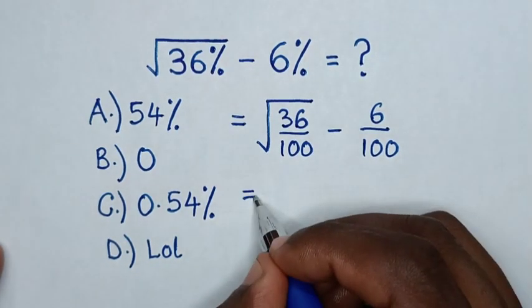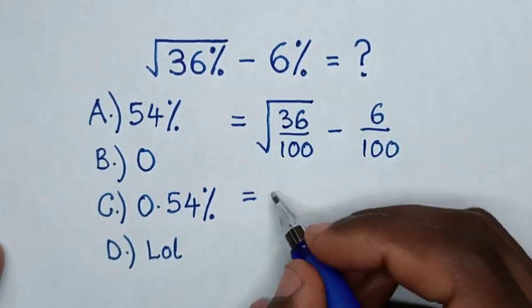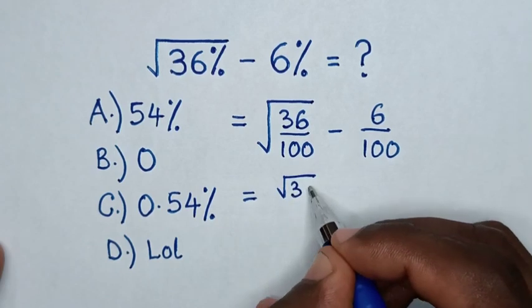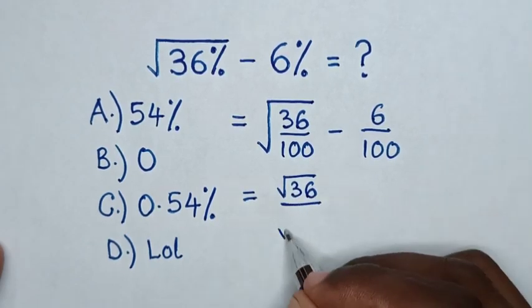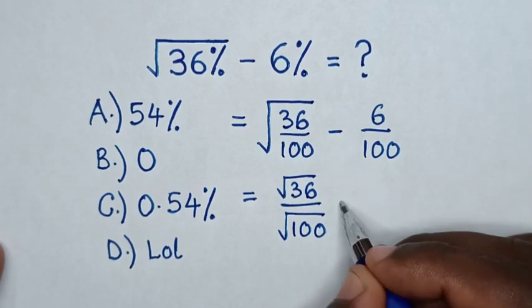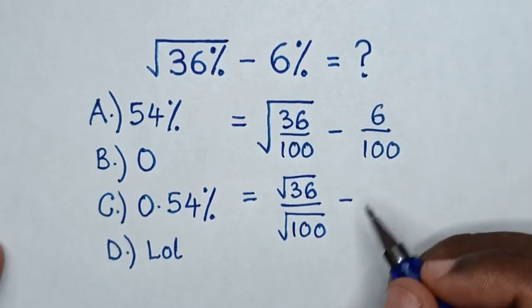Then it equals, we split this square root, so it becomes square root of 36 over square root of 100, minus 6 over 100.